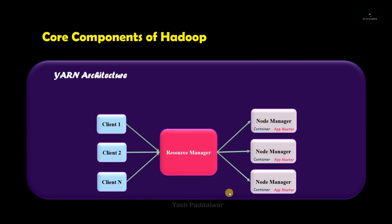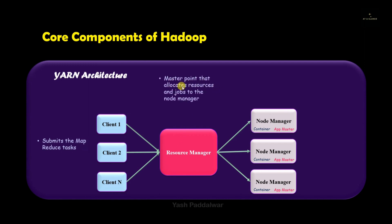The node manager also contains the container as well as the application master. The client submits the MapReduce task to the Hadoop system. As soon as tasks are submitted by the client, the resource manager comes into picture. The resource manager is the master point that allocates resources as well as jobs to the node manager. All the functionalities of scheduling and keeping track of all allocated jobs are monitored by the resource manager.